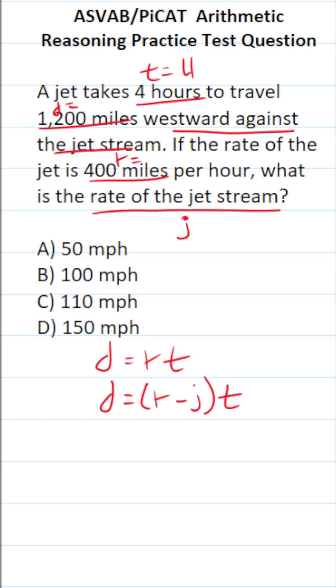Let's plug the values in accordingly. We know the distance was 1,200 miles, the jet was traveling at a rate of 400 miles per hour, we're solving for J (the rate of the jet stream), and it flew for four hours.